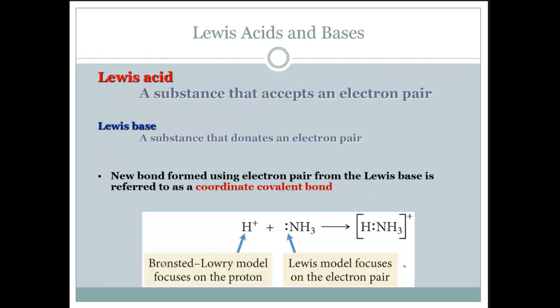Lewis acid is a substance that accepts an electron pair, while Lewis base is a substance that donates an electron pair. New bond formed using an electron pair from the Lewis base is referred to as a coordinate-covalent bond, so these two electrons are being donated to that hydrogen. The Bronsted-Lowry model focused on the H+, while the Lewis model focuses on the electrons themselves.